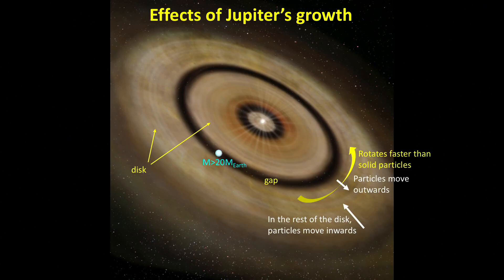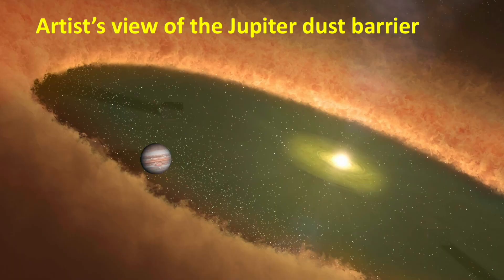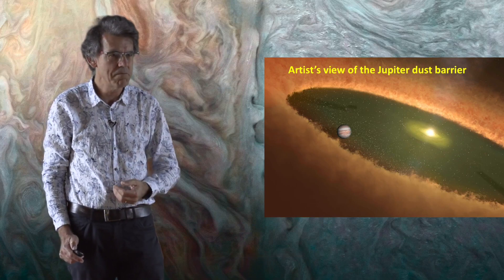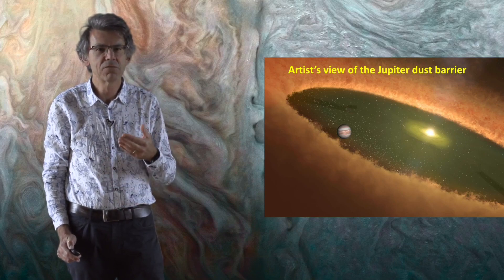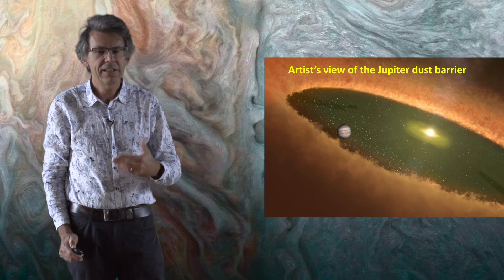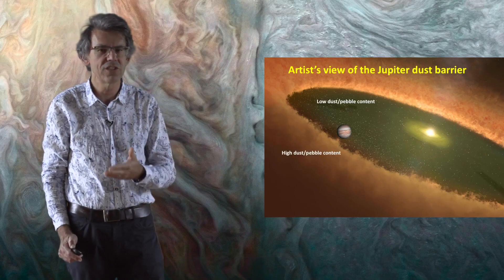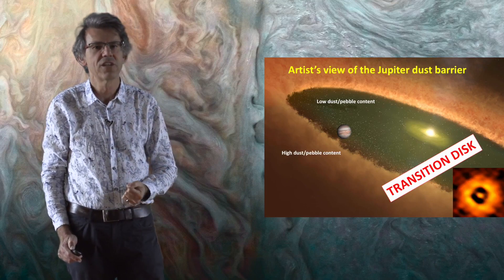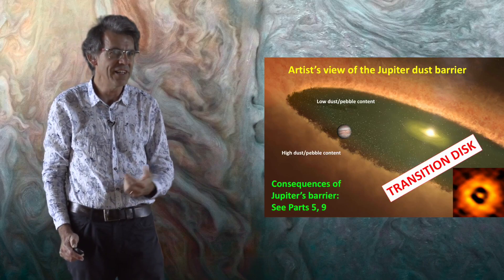Therefore, pebbles from the outer part of the disk migrate towards the sun, have to stop at the outer edge of this ring of fast-rotating gas, and cannot continue their journey towards the sun into the inner part of the protoplanetary disk. Therefore, Jupiter forms an effective barrier to dust drift, which we see here in an artist view. Outside of the orbit of Jupiter, the disk has to remain with a high content of dust and pebbles, whereas the inner part of the disk will have only a small content of dust and pebbles because dust and pebbles cannot drift through Jupiter's orbit. And it's interesting that we actually do observe this kind of disks. They are called transition disks, and we see an image down here at the bottom. And the formation of this dust barrier has many implications that we will detail in part five and nine of the Mojo videos.